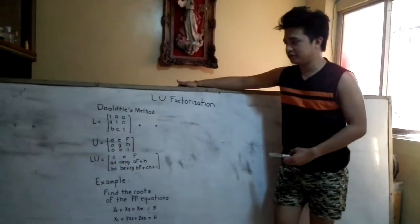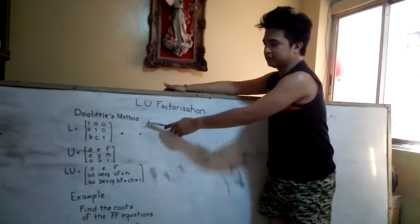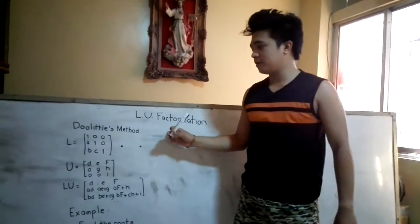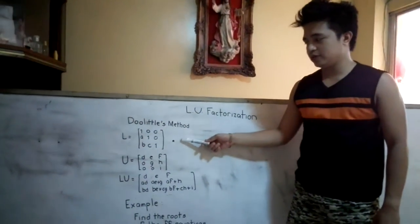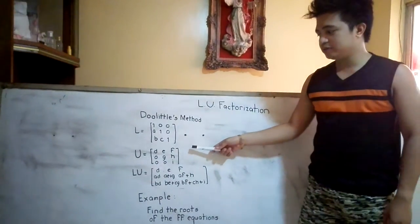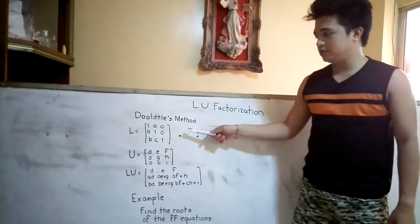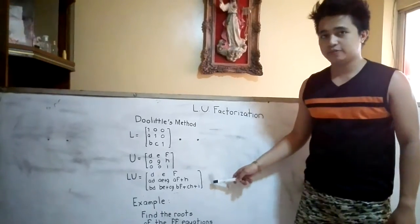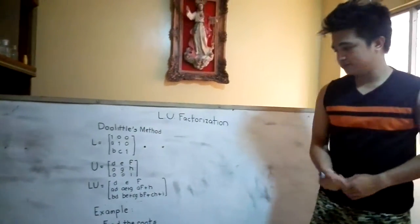I'm going to talk about Gaussian elimination using the Doolittle method. In this method, the pattern for the lower triangular matrix is this one, and for the upper triangular matrix is this one. And when we multiply the lower and upper triangular matrix, here is the product. So let me give you some examples of this method.